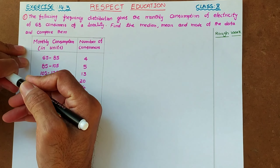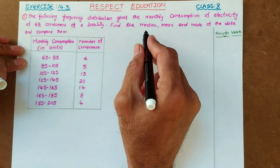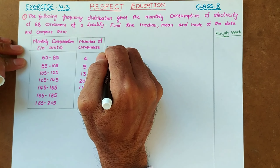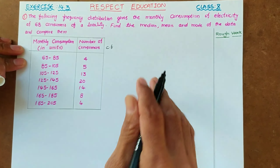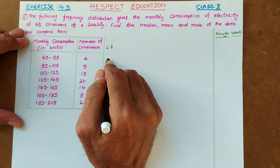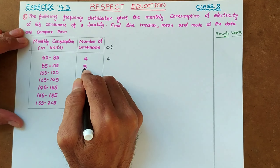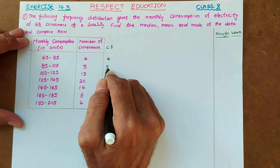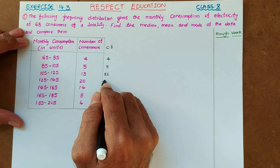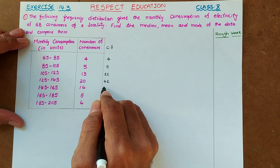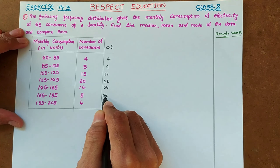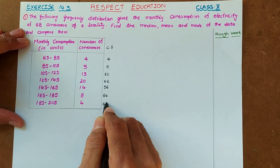First, for finding median we need to find cumulative frequency — in short, cf. So here, writing the cumulative frequencies: 4 as it is, 4 plus 5 is 9, 9 plus 13 is 22, 22 plus 20 is 42, 42 plus 14 is 56, 56 plus 8 is 64, 64 plus 4 is 68.